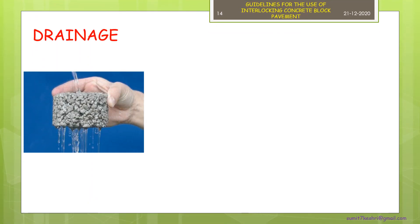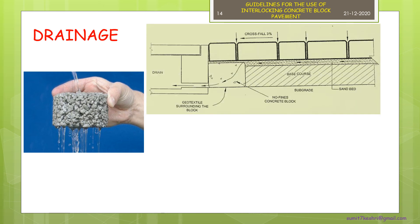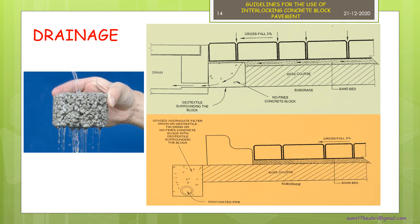The block pavement is not a waterproof layer due to the sand-filled joints, and the water finds its way down to the sand bedding, base and subgrade. Therefore, special attention is required to get the water out, otherwise it can ruin the entire pavement. A crossfall of 2% slope is generally sufficient to drain the surface runoff. But it is desirable to provide 3% crossfall in case of heavily trafficked roads to avoid formation of water puddles.